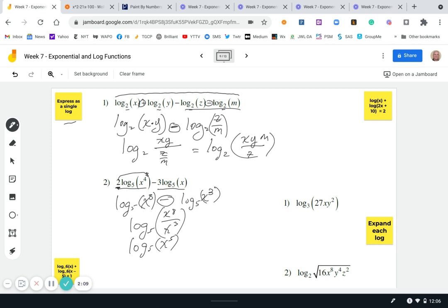Let's expand this guy over here. So log base three of 27 x y squared. Well, there's a lot of multiplication in there. So that means there's going to be a lot of addition. So we can say log base three of 27 plus log base three of x plus log base three of y squared.